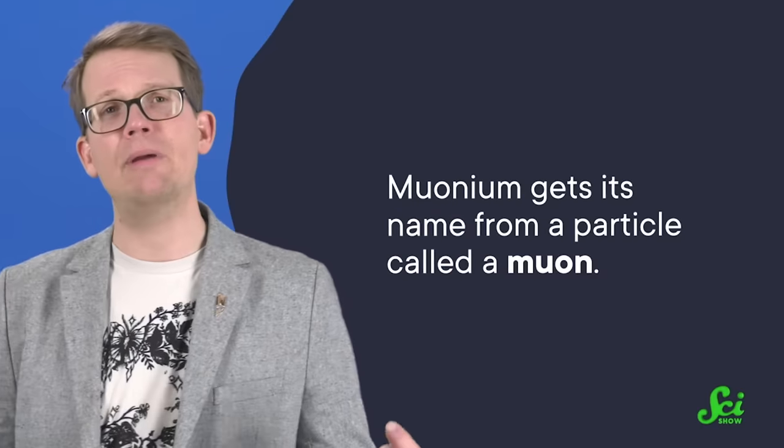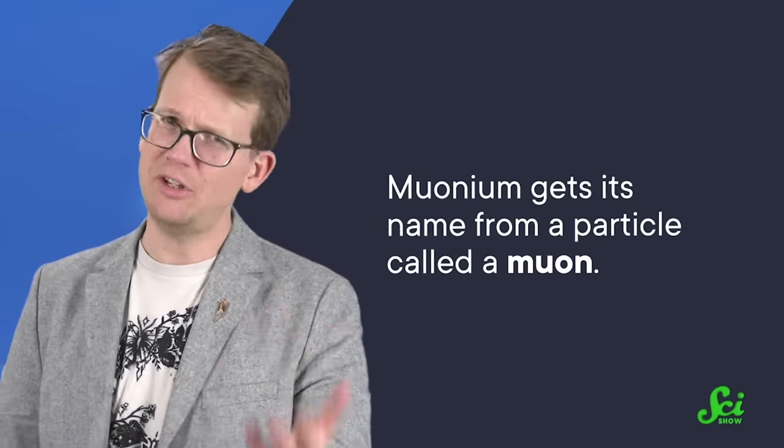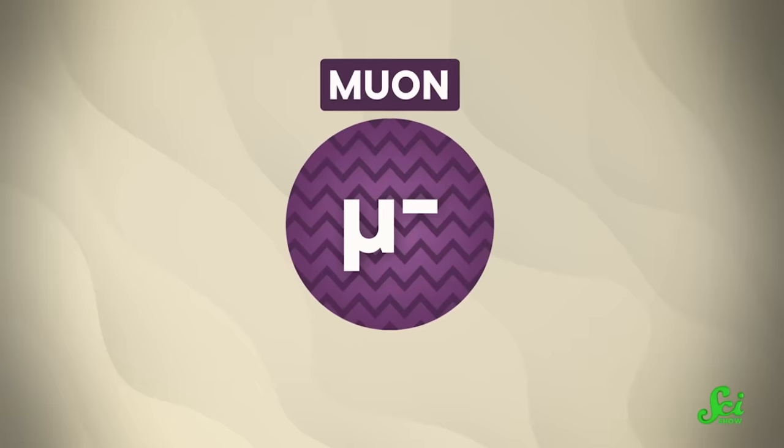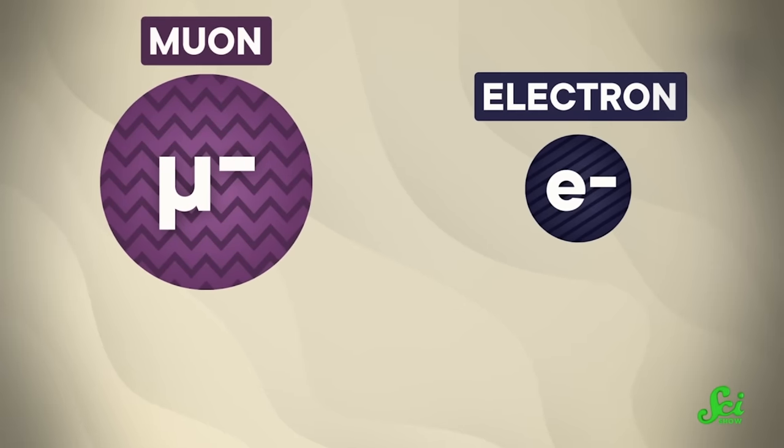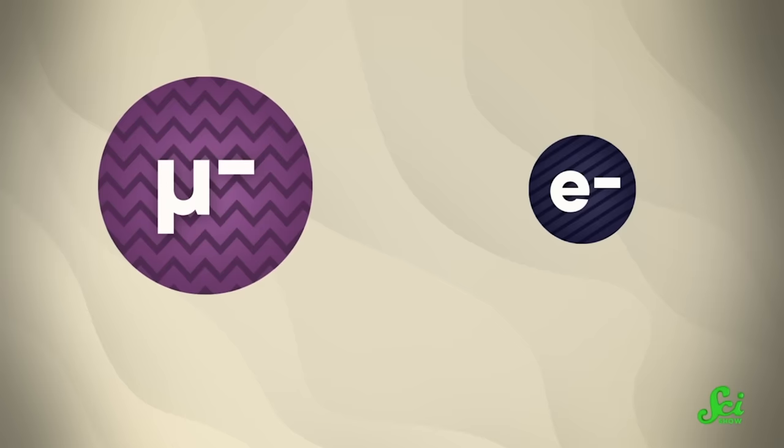Muonium gets its name from a particle called a muon. So let's start by explaining what that even is. Basically, it's a particle that is almost exactly like an electron, with the same negative electric charge.